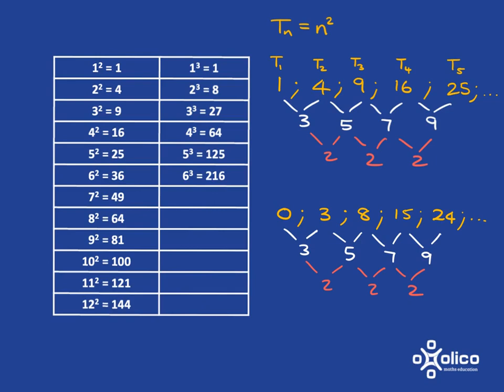And that immediately alerts me to the fact that my tn is going to have an n squared in it. So then I can go and compare what I actually have with the n squared, with the squared table.